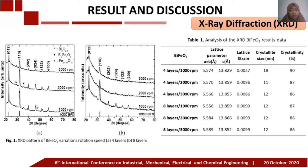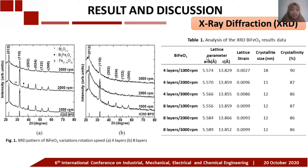Increasing the number of film layers causes higher XRD intensity. As shown in Table 1, the crystalline size obtained across variations in rotational speed and number of layers is relatively the same, indicating that neither parameter significantly affects crystal size. The results also show a relatively similar lattice strain across varying rotational speeds and number of layers. BFO crystal formation occurs during the annealing process, so rotational speed and number of layers affect intensity but not crystallinity.